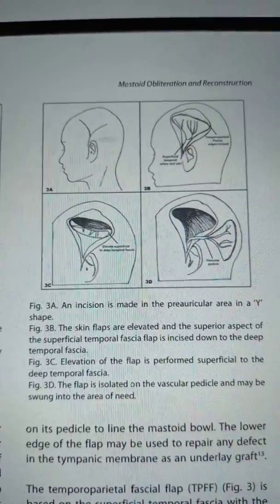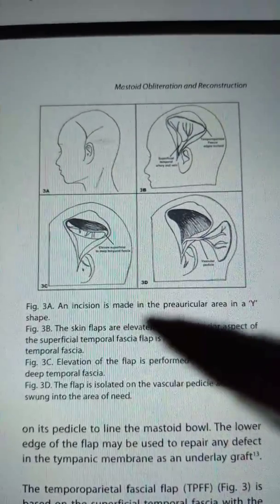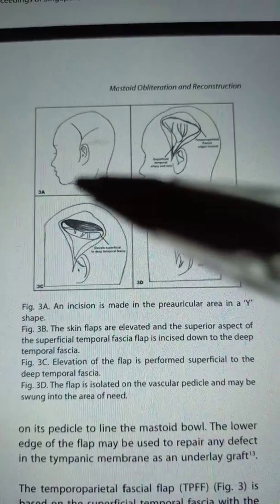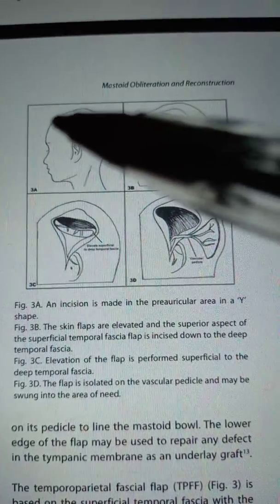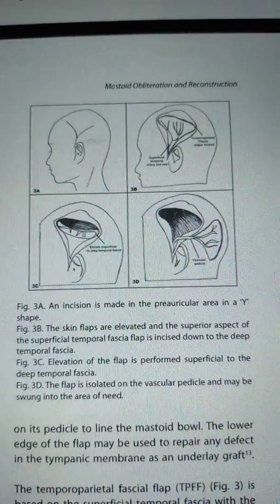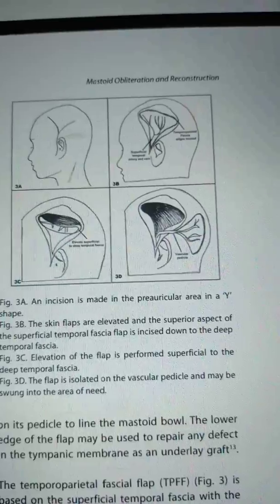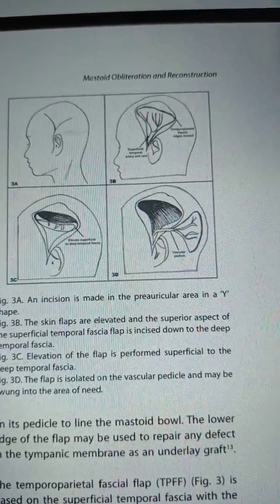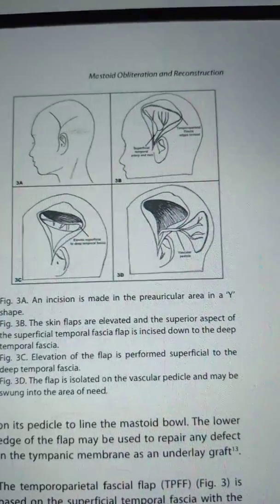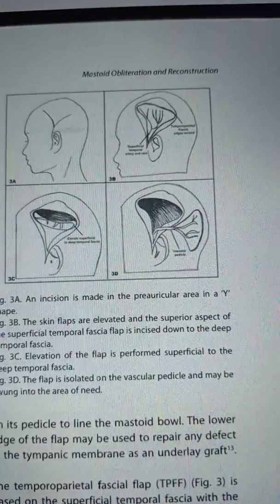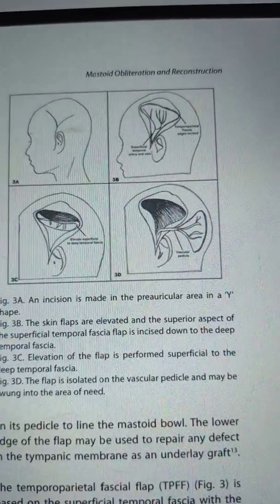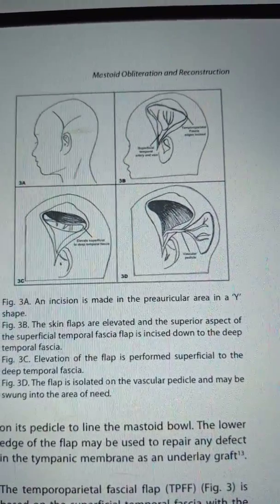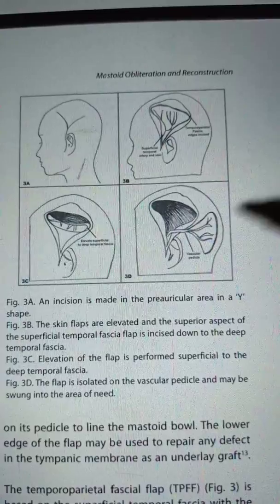How is the Temporoparietal flap made? An incision is made in the preauricular area in a Y format. The skin flaps are elevated and the superior aspect of the superficial temporal fascia flap is incised down to the deep temporal fascia.